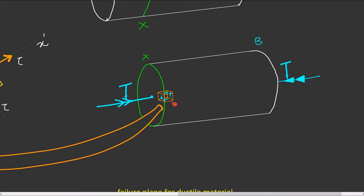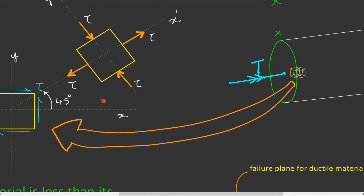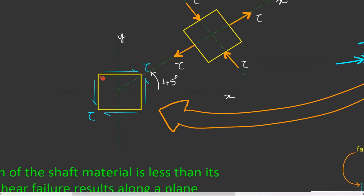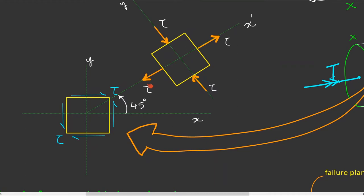Consider a three-dimensional stress element whose one face is coplanar with section XX. Idealizing the three-dimensional element in two dimensions, we observe that this stress element is under pure shear. From the transformation equations of stresses, when an element is under pure shear at a particular point, if we rotate the coordinate axis of reference by 45 degrees at that same point, normal stresses are induced — both tensile and compressive — on adjacent faces of that same cubical element.